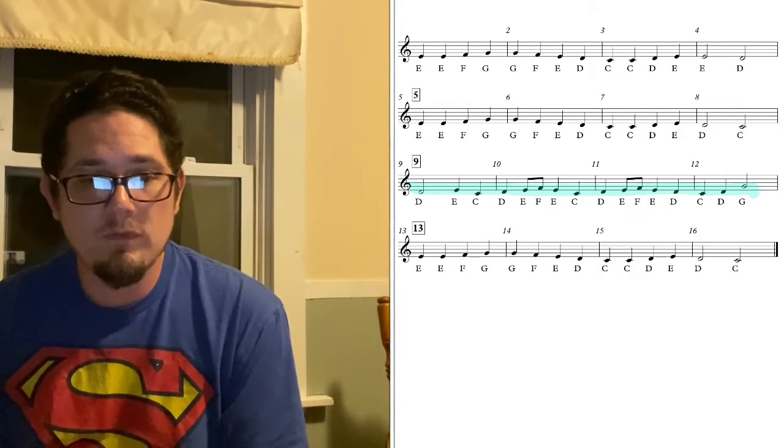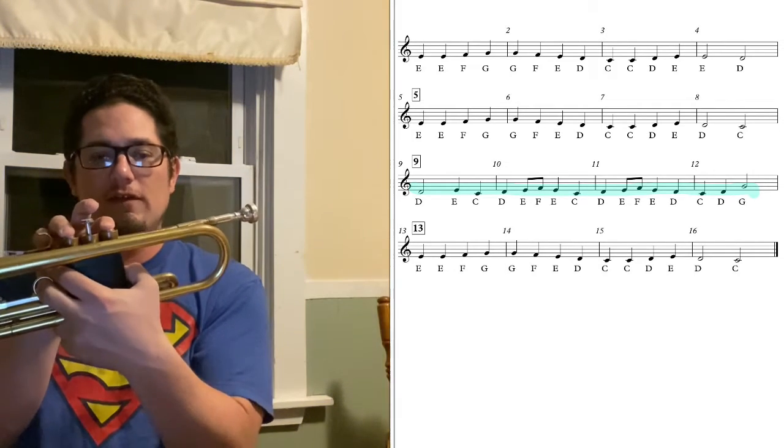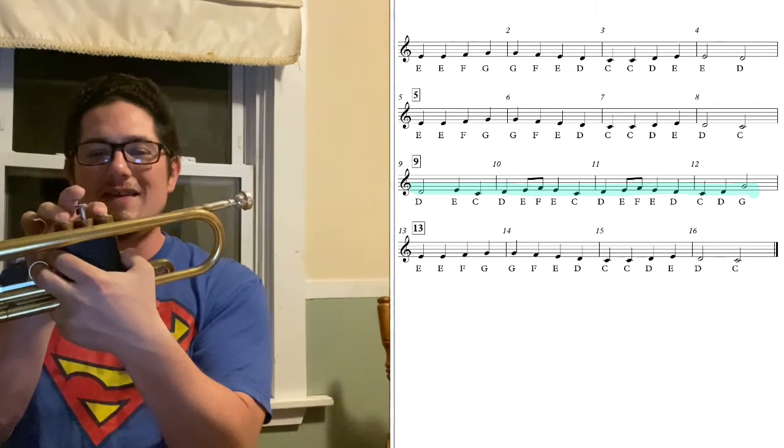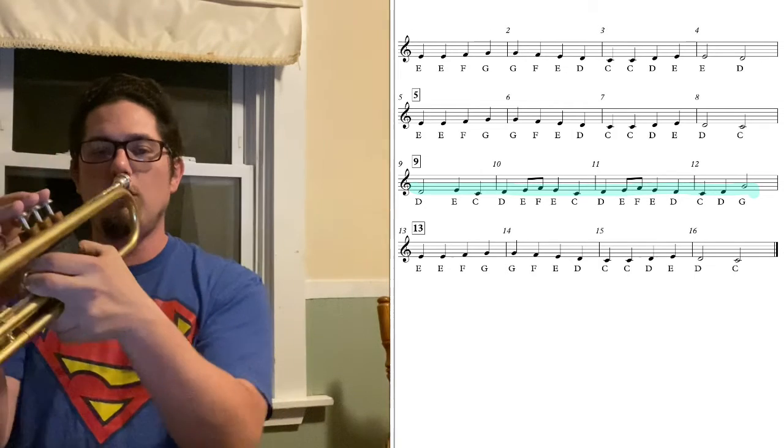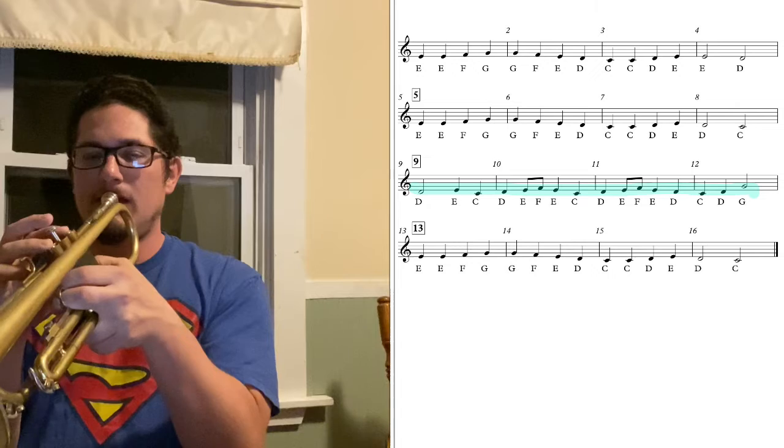All right. Now we're at measure nine. We're going to do two measures again. Measures nine and ten. It goes like this. D, E, C, D, E, F, E, C. Here we go. Let's try it together. One, two, ready, go.